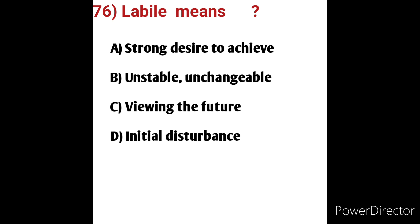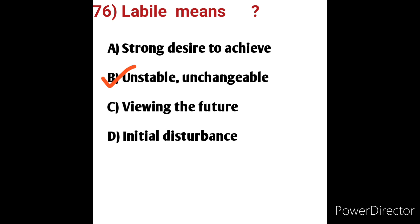Labile is characterized by emotions which are easily aroused, freely expressed, and tend to alter quickly and spontaneously. In psychiatry, affect or emotional lability is characterized by rapid, exaggerated changes in mood where strong emotions occur — for example, a person suddenly crying uncontrollably. So labile means unstable/unchangeable; option B is the correct answer.